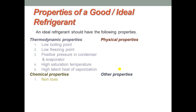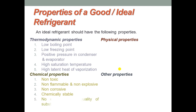Next are chemical properties. The first is non-toxic. The second is non-flammable and non-explosive to avoid risk of fire and explosion. Non-corrosive, so that the refrigerant does not corrode the machine components. Chemically stable, so that it does not dissociate or break down — the refrigerant has to be stable for the lifetime of the refrigerator. And no effect on the quality of substance stored, and non-irritating and odorless.